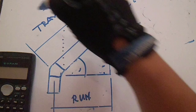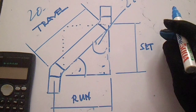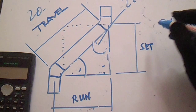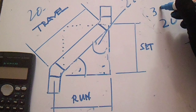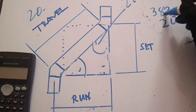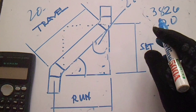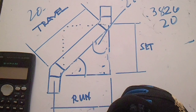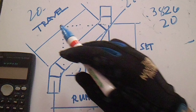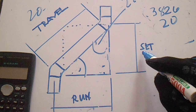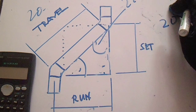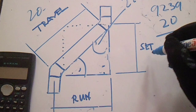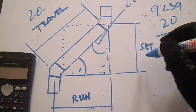If the given is travel — for example 20 — at 22.5 degrees, multiply it by 0.3826 to find this run. And if you want to find this set from travel, multiply travel by 0.9239 to find this set.